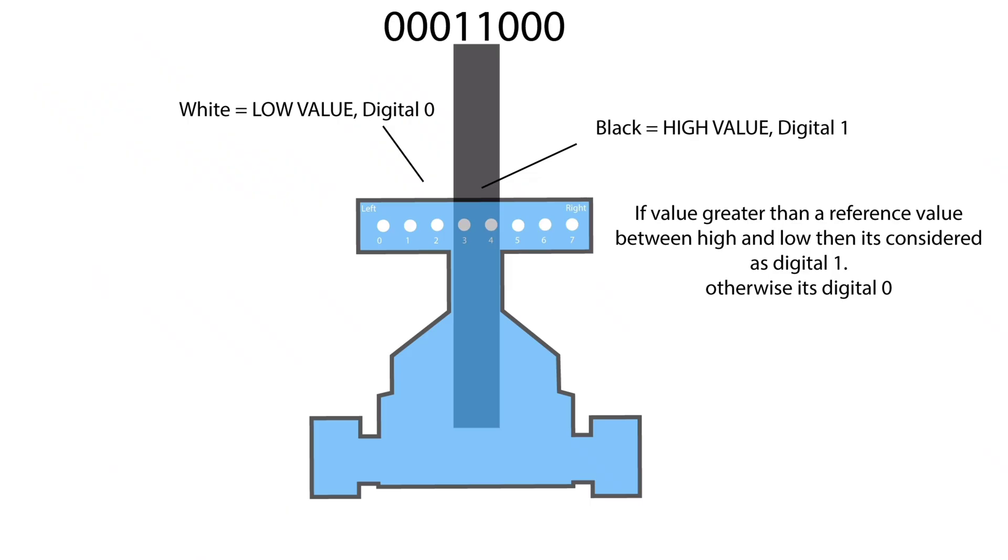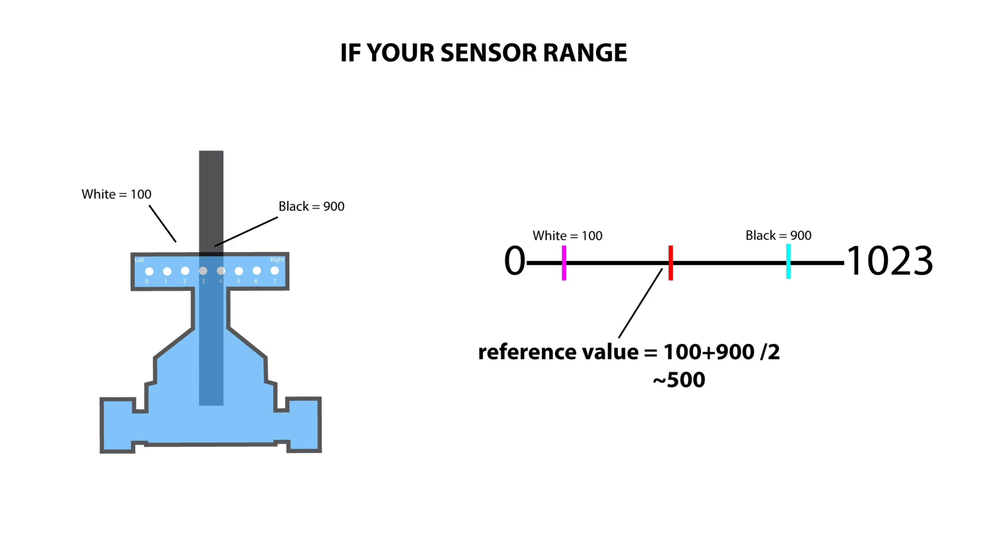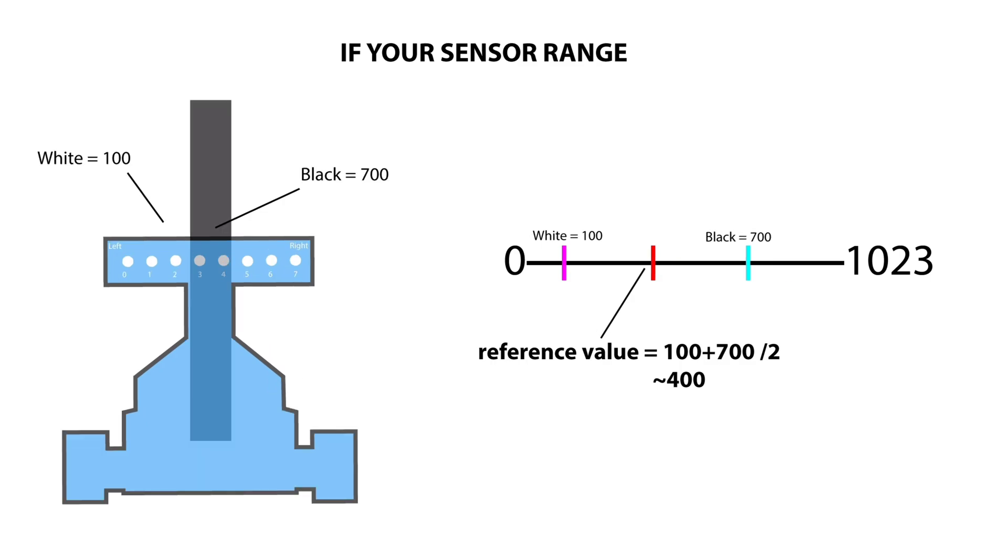We convert analog values into digital values using a reference point between the highest and lowest analog readings. This analog-to-digital conversion depends entirely on the reference point, which makes it very important. For example, the Arduino Nano has an analog range from 0 to 1023, so the reference value is 512. If the highest value from the sensor is 900, the reference becomes 500. If the maximum value is 700, the reference becomes 400.